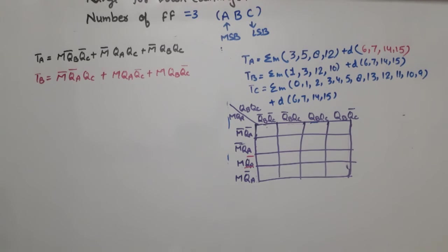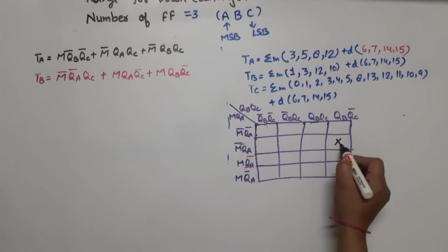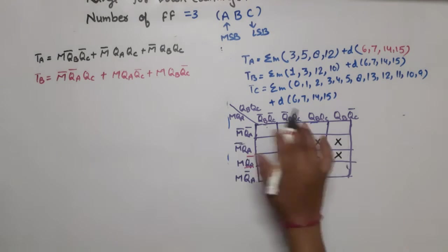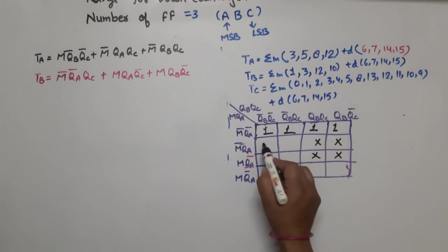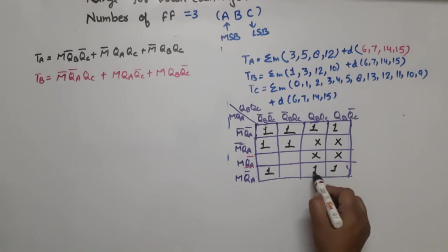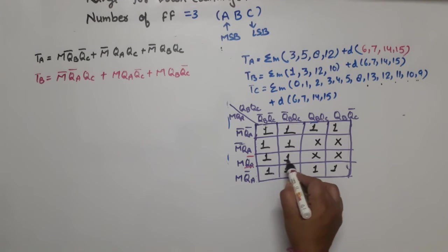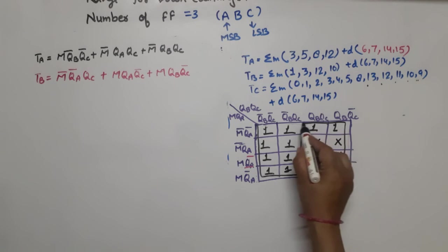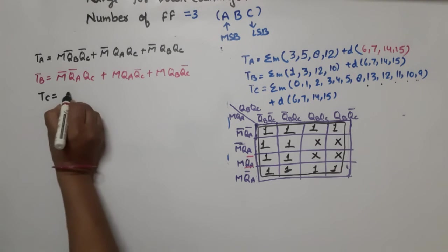For TC K-map: the don't cares are 6, 7, 14, 15. All remaining minterms — 0, 1, 2, 3, 4, 5, 8, 9, 10, 11, 12, 13 — are all 1. When we group all these together, TC simplifies to 1.